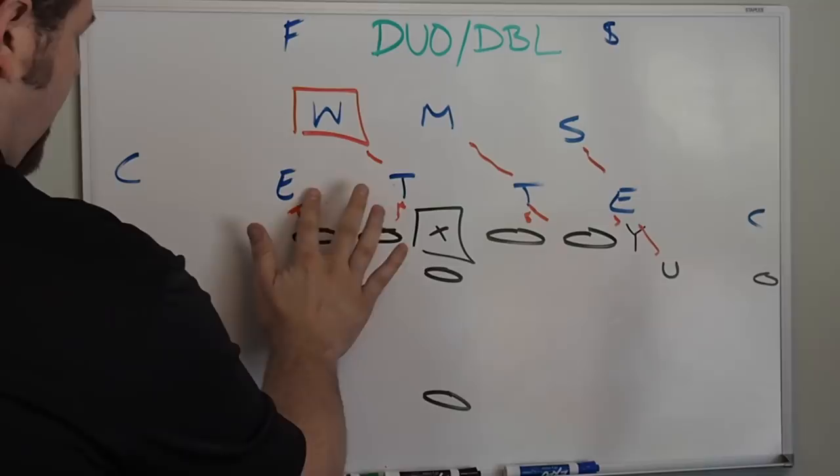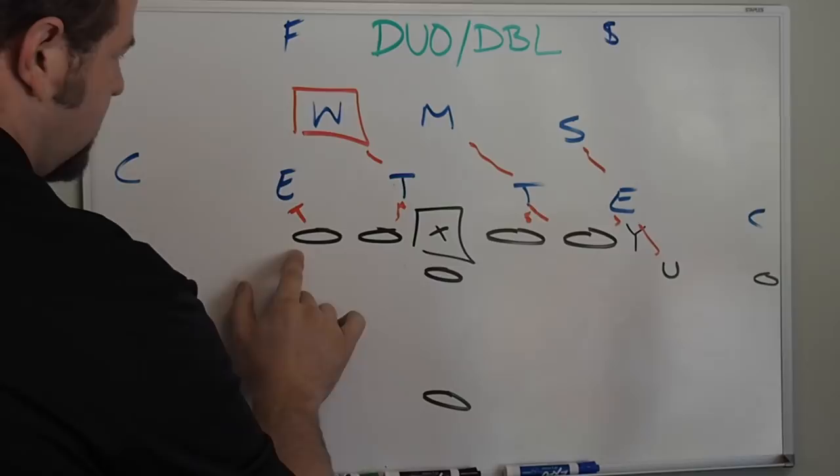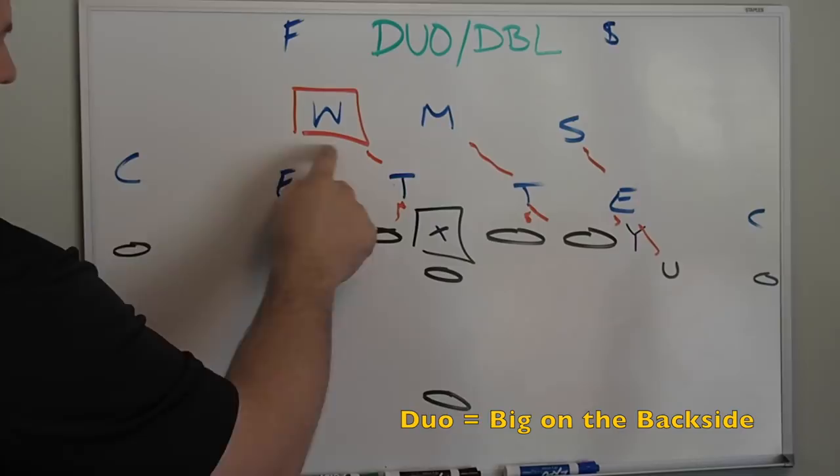That leads us to, and also on the backside as well. On the backside of zone, the end will have the will right there. Excuse me, the tackle will have the will right there. And on a duo play, the tackle is big on the backside because he doesn't have to block the will here.